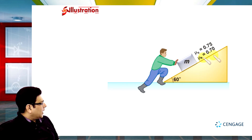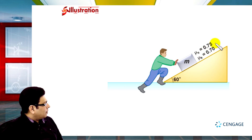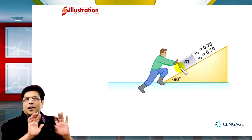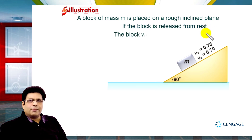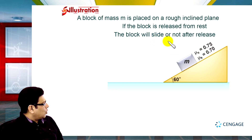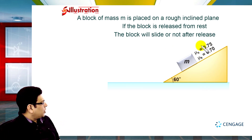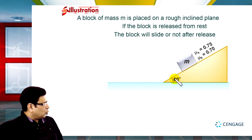Now let us discuss an illustration related to angle of repose. Here we have a rough inclined plane with a block of mass small m placed on it. The coefficient of static friction is 0.75 and the coefficient of kinetic friction is 0.70. The inclination of the inclined plane with the horizontal is 60 degrees. A person is holding the block to prevent it from sliding. The question is: will the block slide or not after it is released?